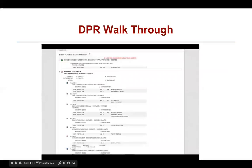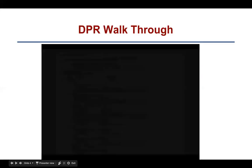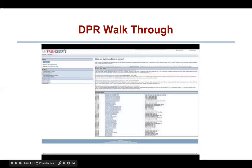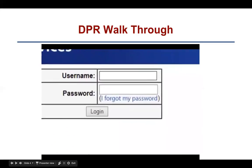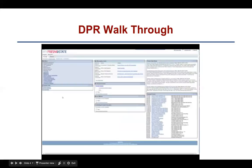Hello and welcome to this video tutorial on how to run your DPR. To request a Degree Progress Report, you'll need to log into your my Fresno State portal. Click the sign in button, enter your email ID and password, and click login. Under My Menu,